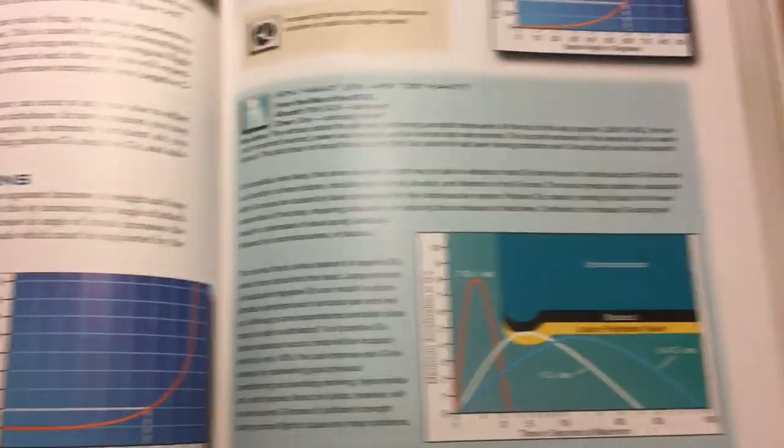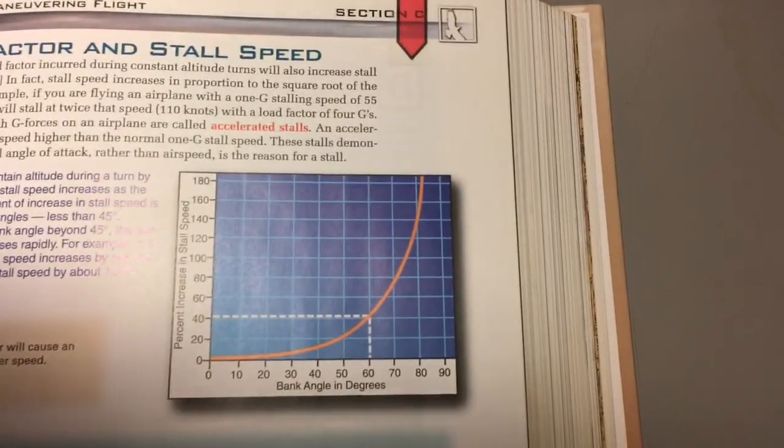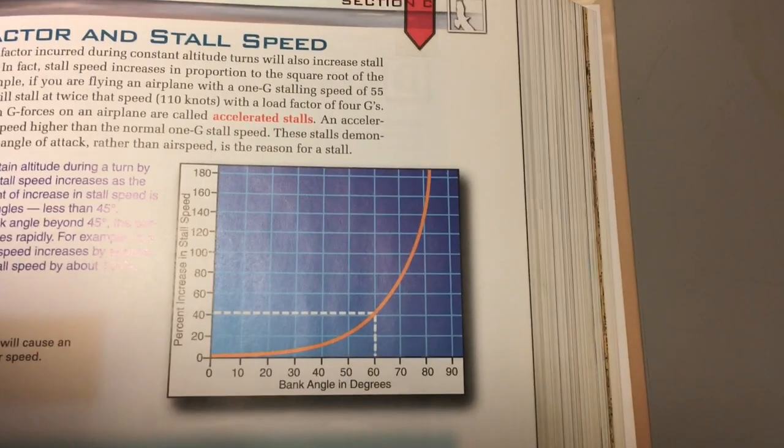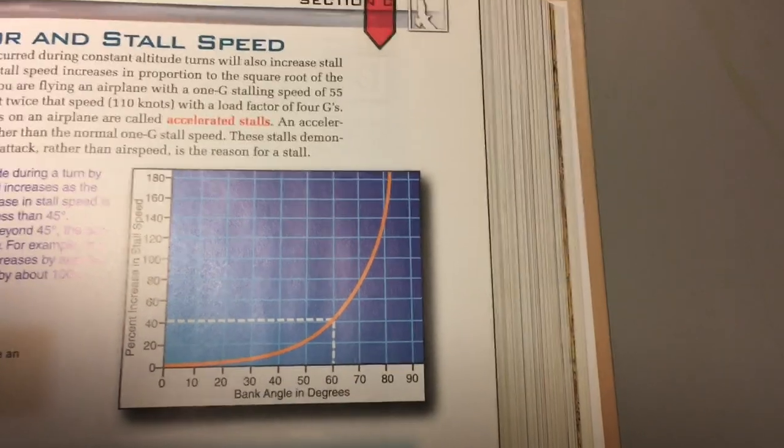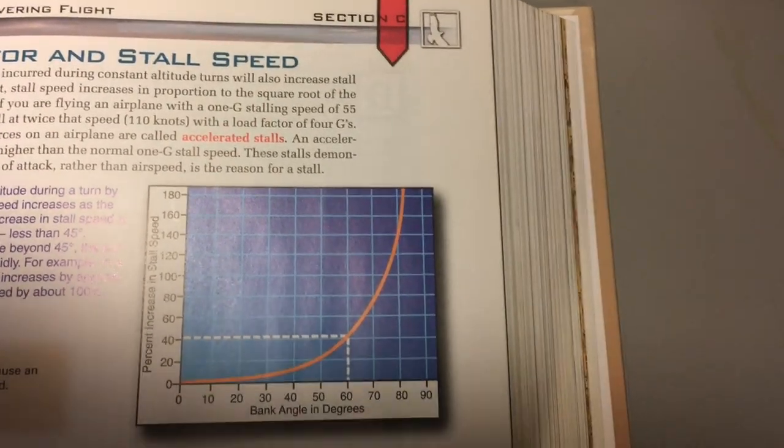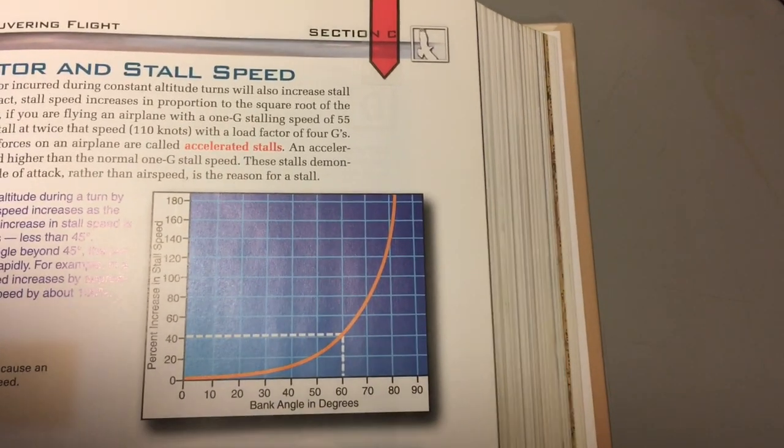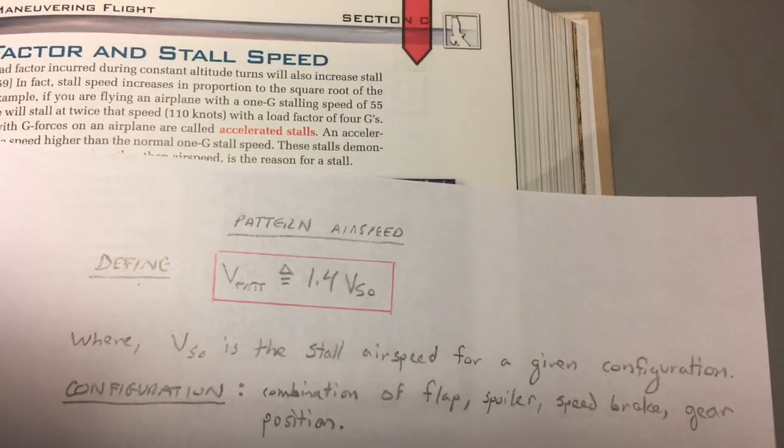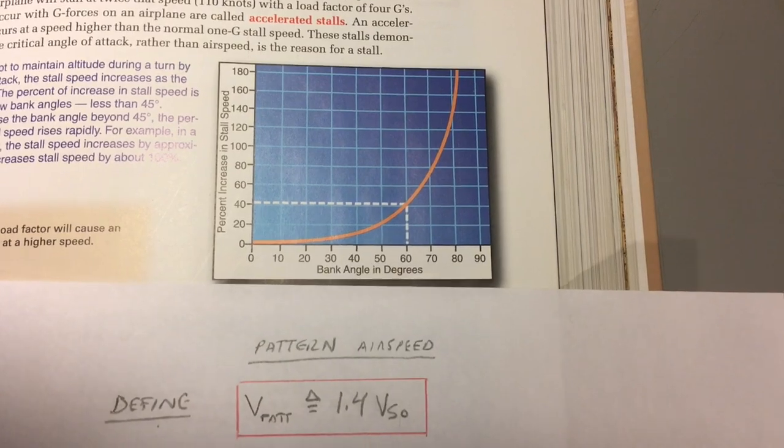Similarly on page 3-61 we can re-represent this as percentage increase in stall speed as a function of bank angle. What we'll notice immediately is that at 60 degrees bank angle there's a 40 percent increase in stall speed. That looks kind of familiar, kind of like the definition of our approach speed.